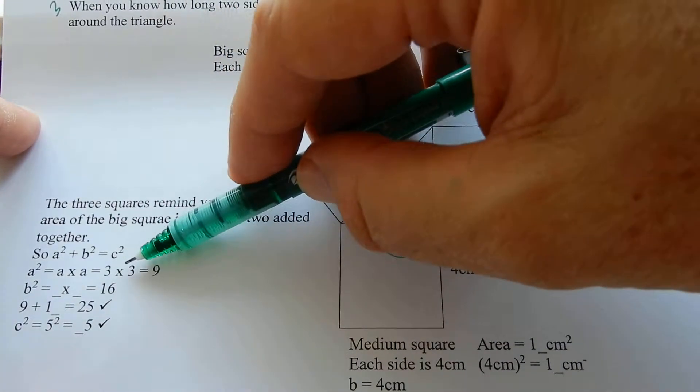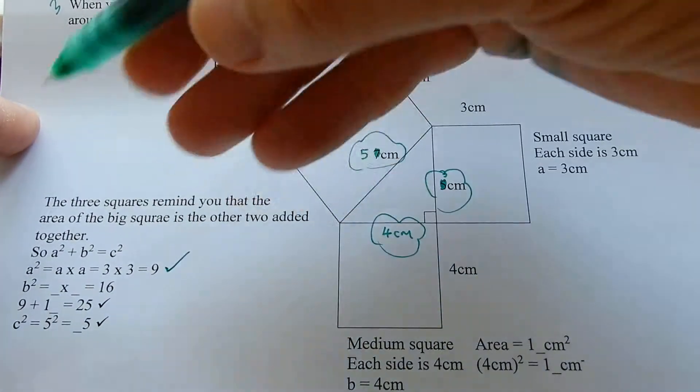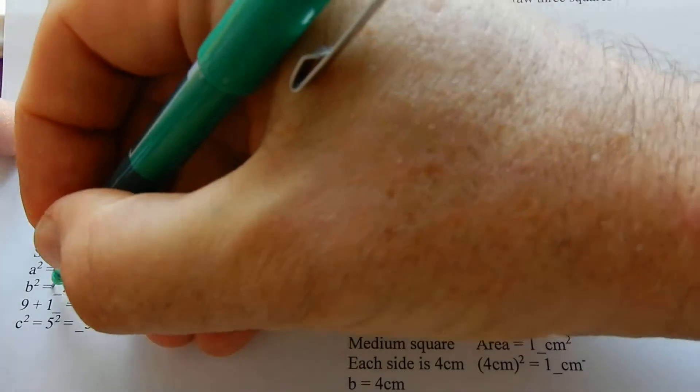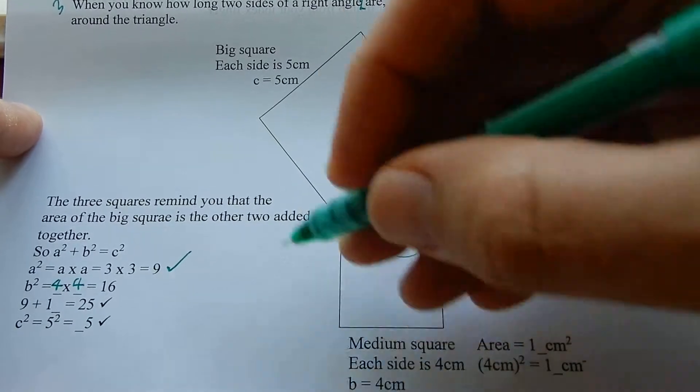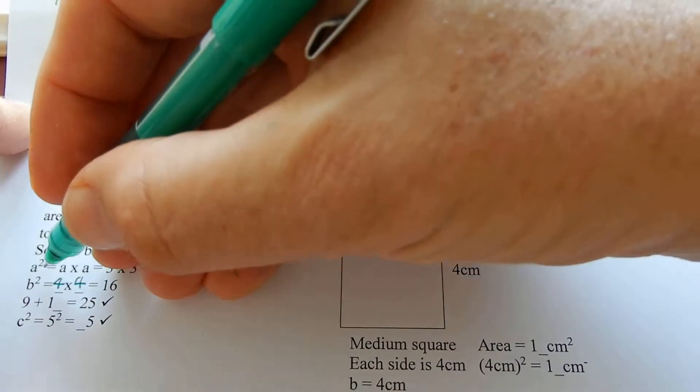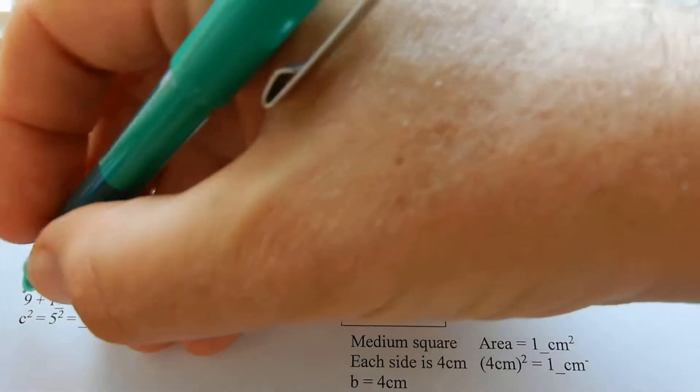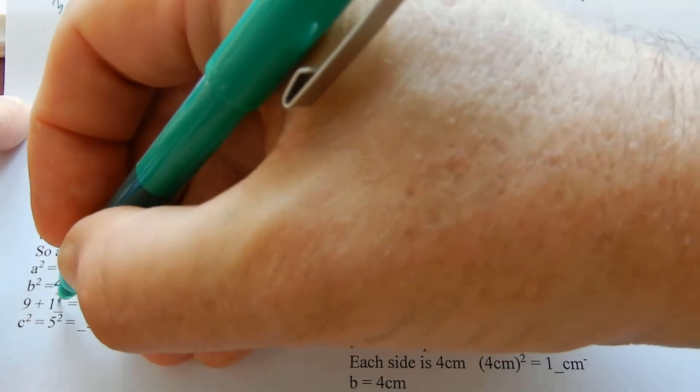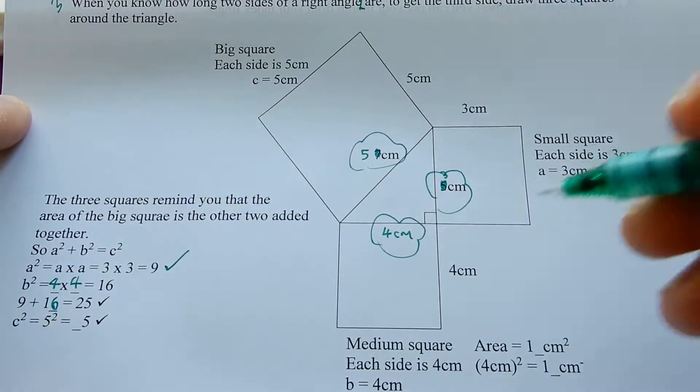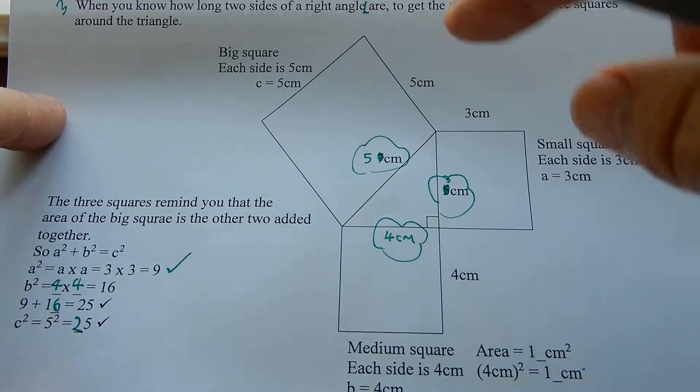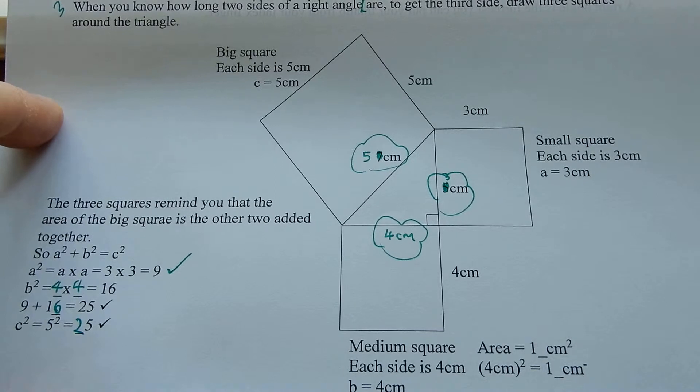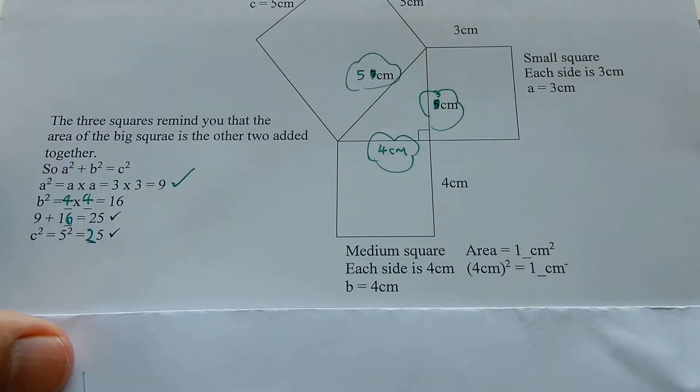A squared is A times A. Three times three is nine. B squared is four times four because the size of these is four. So, nine plus four times four is sixteen equals twenty-five. Five squared is twenty-five. It works! The area of that one equals the area of that plus the area of that works for all right-angled triangles. If it doesn't work, it's not a right-angled triangle.